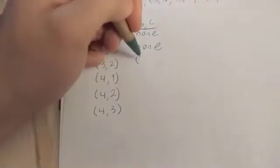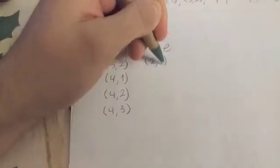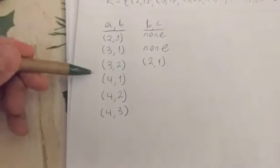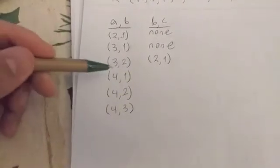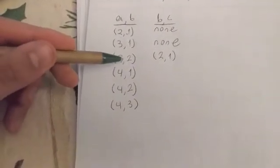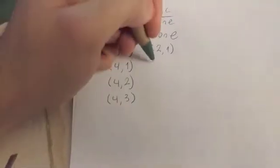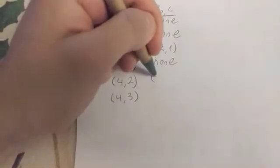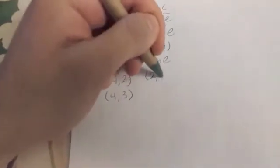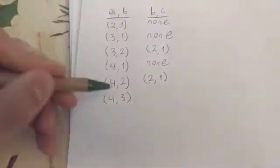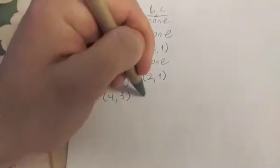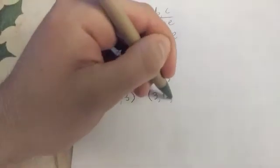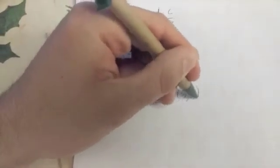For this one we have (2,1), this is the only one that begins with the 2. For 1, once again here we have none. For 2 we just have, once again, our (2,1). Then our 3, we have (3,1) and (3,2).